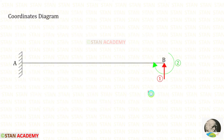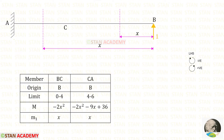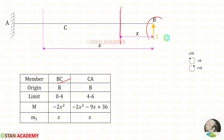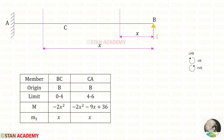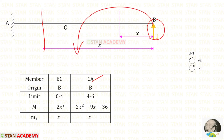Now we are going to find the moment M1. For that, we remove all loads from the beam and apply a unit load at the first coordinate, which is RB, in the upward direction. For section BC, the unit load acts in the anti-clockwise direction, so it is positive, and M1 in BC equals X. For section CA, similarly, the unit load acts in the anti-clockwise direction, so M1 in CA also equals X.